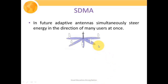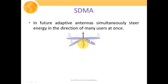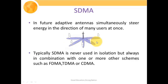In future, adaptive antennas simultaneously steer energy in the direction of many users at once. Adaptive antennas can modify their coverage depending on the requirements imposed by users. As shown in the figure, the lobe strength, width, and length keep changing depending on the presence of users. SDMA is never used in isolation, but always combined with FDMA, TDMA, or CDMA.